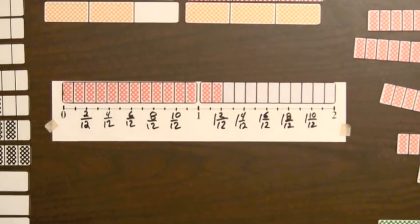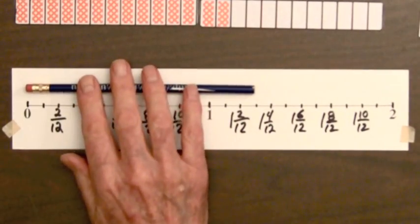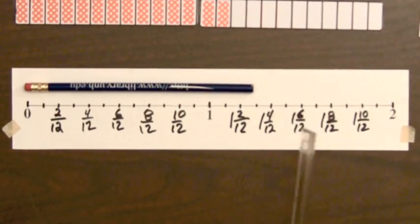Let's use the number line for a few more measurements. Here's a pencil that has a length of more than 1 and 2 twelfths. It's almost 1 and 3 twelfths. Very close. So, rounded off, the length of this is going to be 1 and 3 twelfths bars.